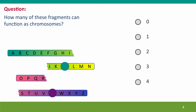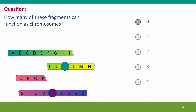Here's a question. Here are two chromosomes that have each been broken. How many of these fragments can function as chromosomes as they are? The answer is none of them can function as chromosomes. Two of the fragments have a broken end and have no centromere. The other two have centromeres, but they still have one end that is not a telomere, and so they can't function.